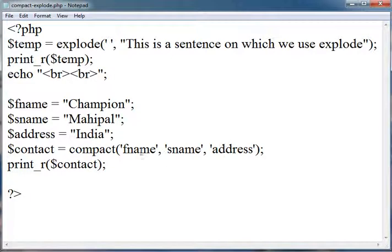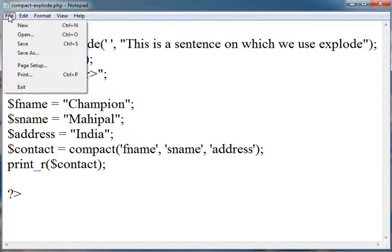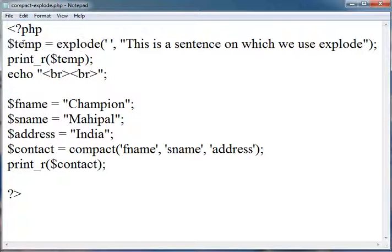Here are the variable names from which you want to make the array. After that, I have just printed the values of the array. So we need to run this. I have saved this as compact-explode.php. You should also save it.